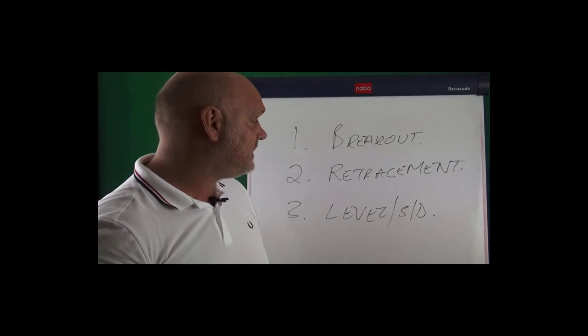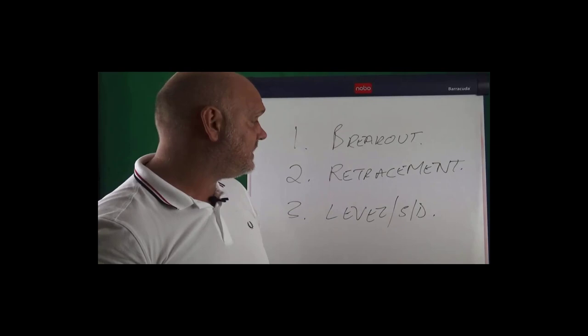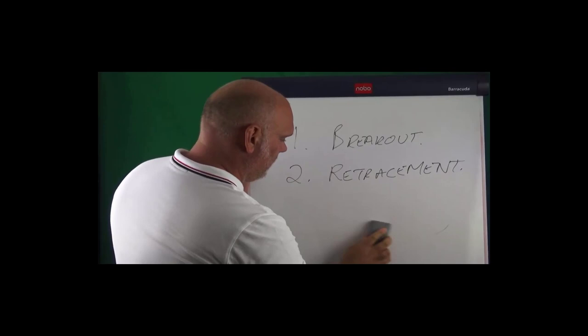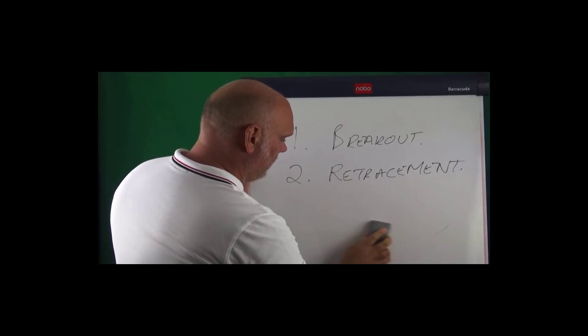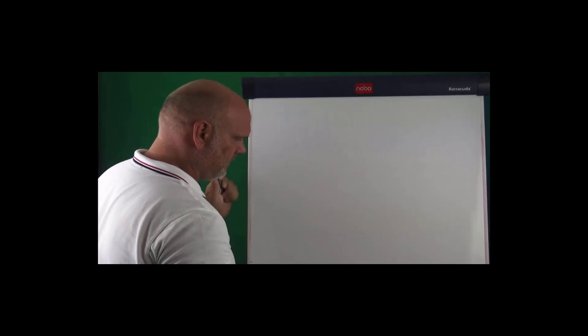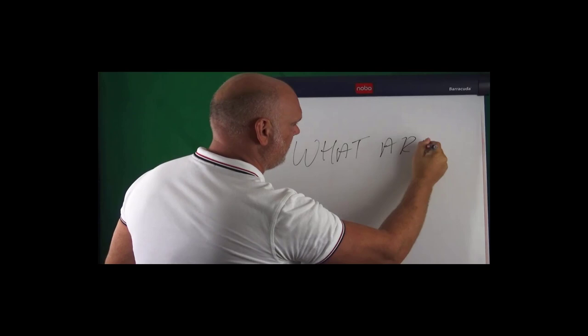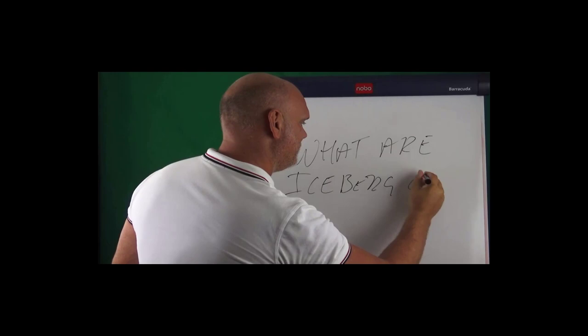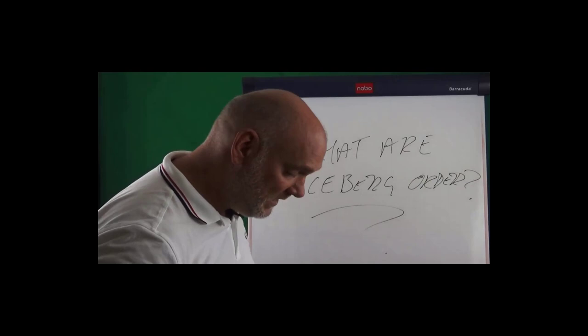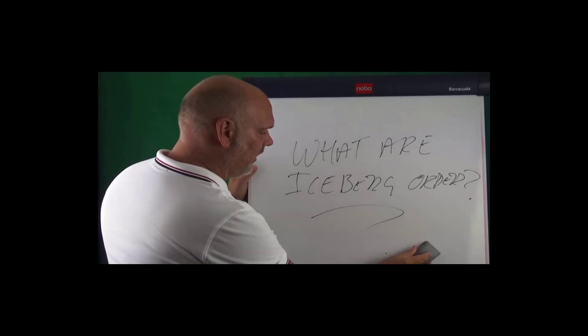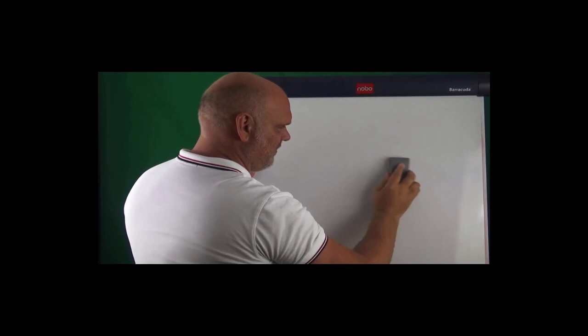Basically buying off support and selling off resistance — that type of trader. We're going to focus on the third one, level trading, in this training. Before we do that though, we need to understand what iceberg orders are, how we can take advantage of them, and how we can use them to make money in the financial markets. An iceberg is exactly what it says on the tin — the tip of the iceberg is really the best way to describe iceberg orders.